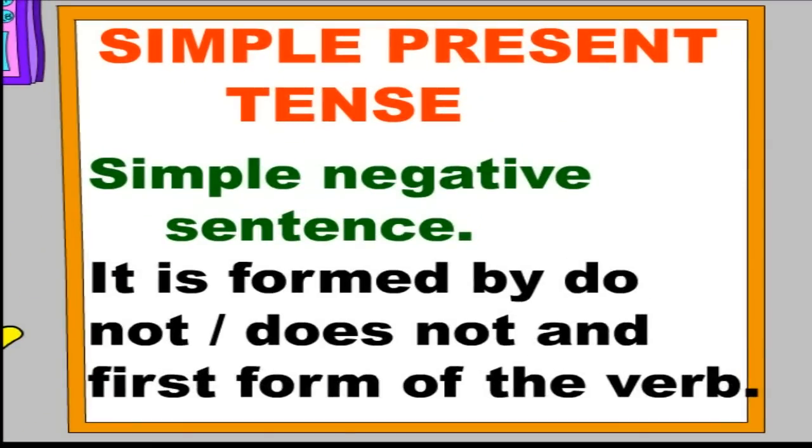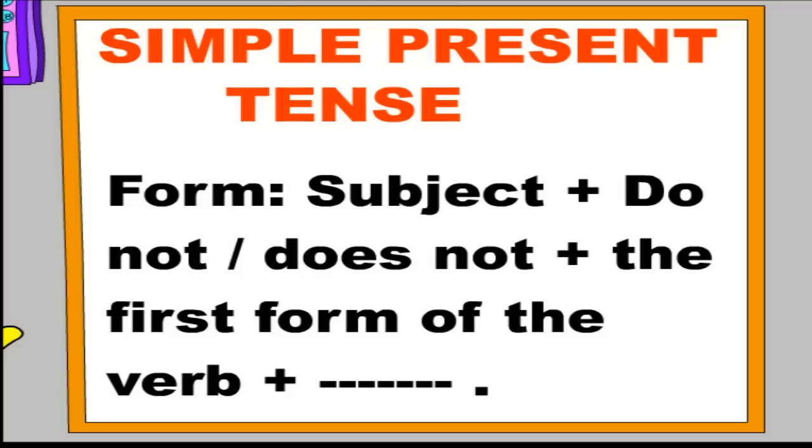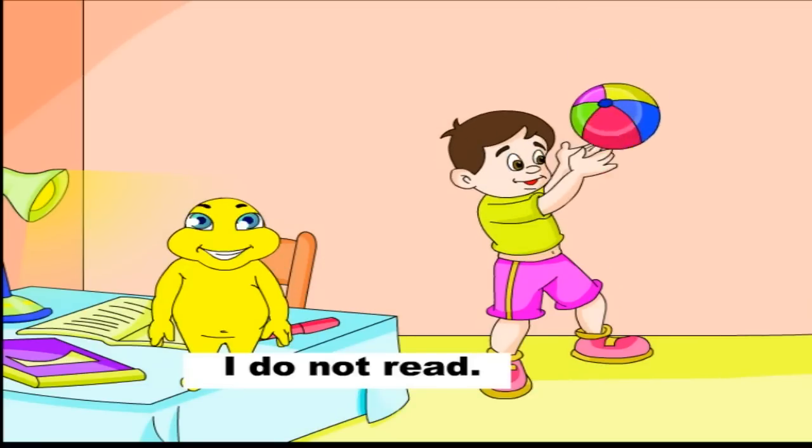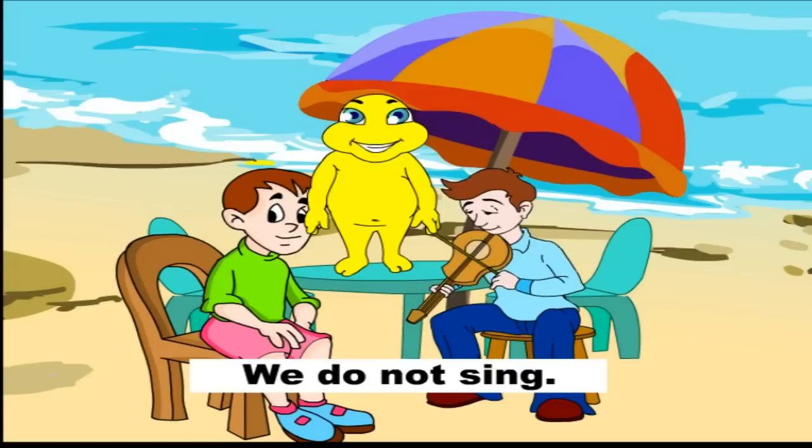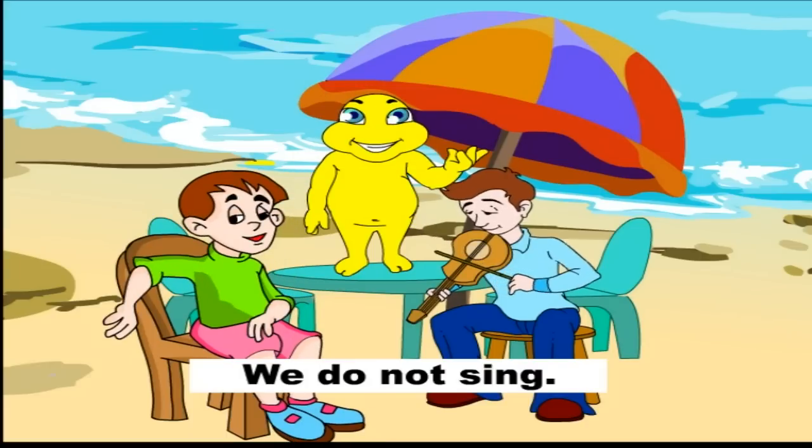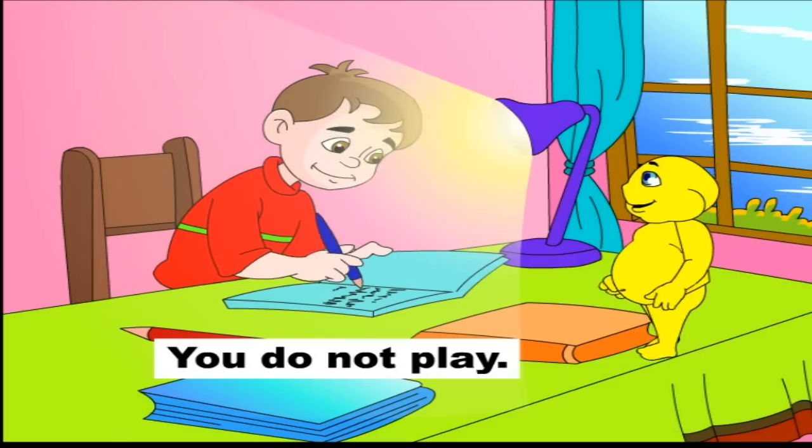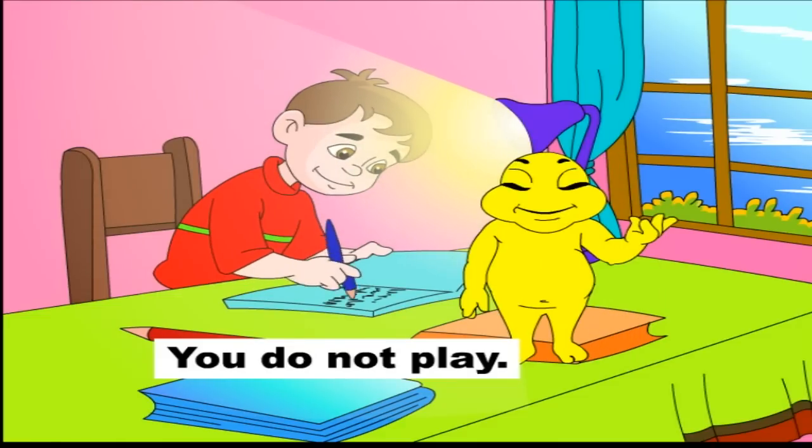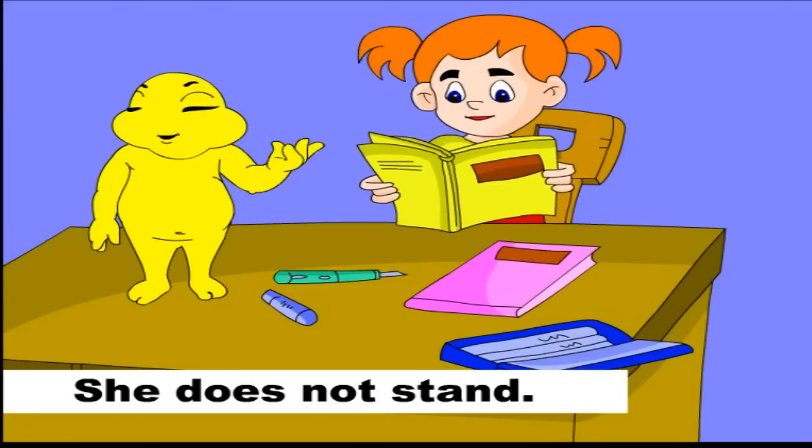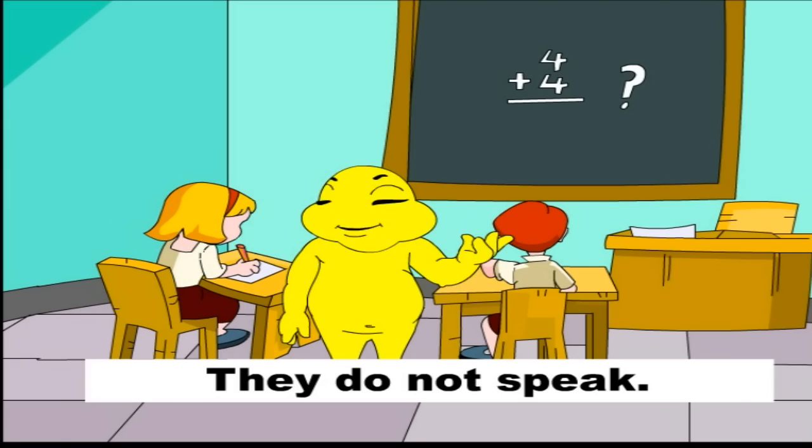Simple negative sentences. It is formed by do not or does not and the first form of the verb. The form is subject plus do not or does not, the first form of the verb plus the activity. Examples: I do not read. We do not sing. You do not play. She does not stand. They do not speak.